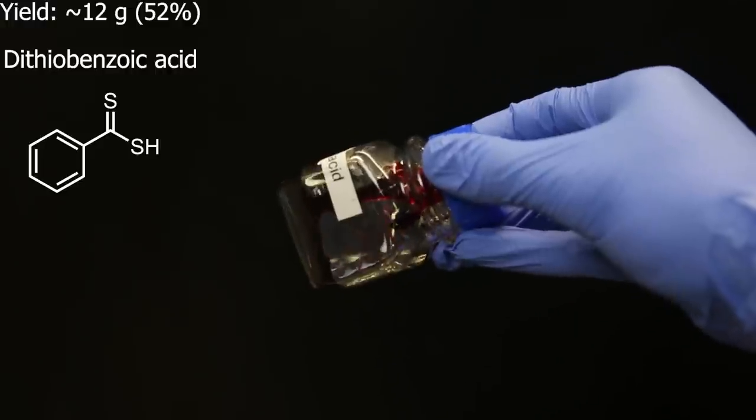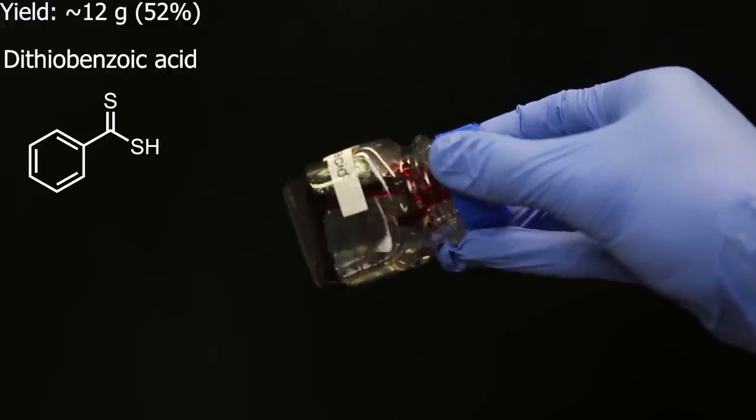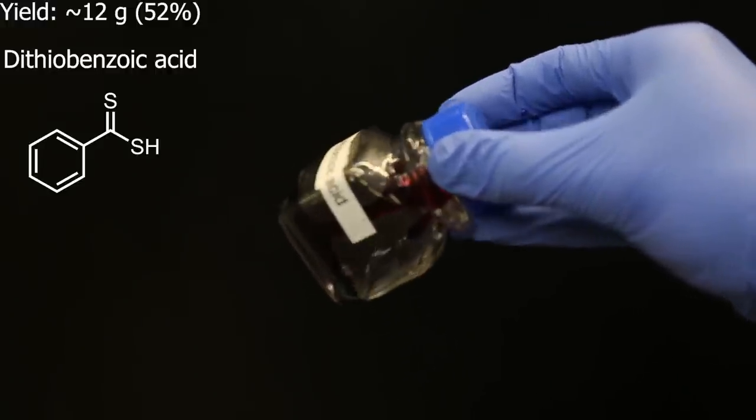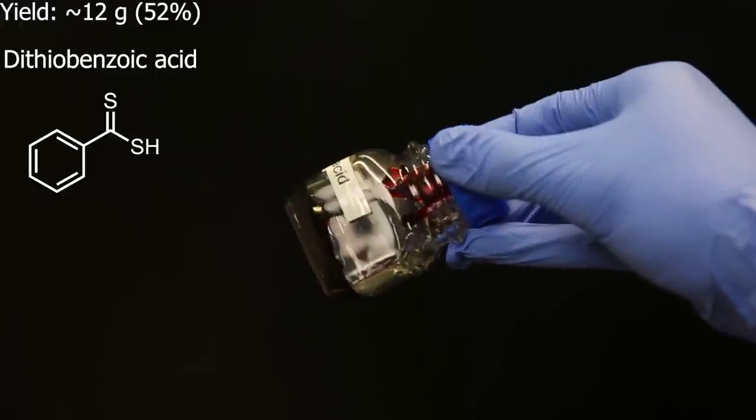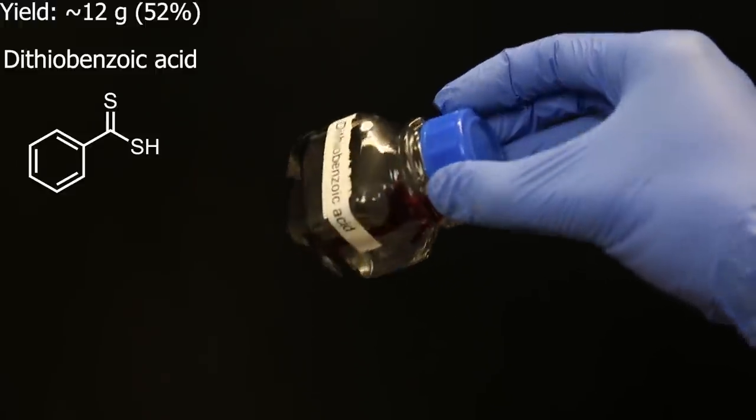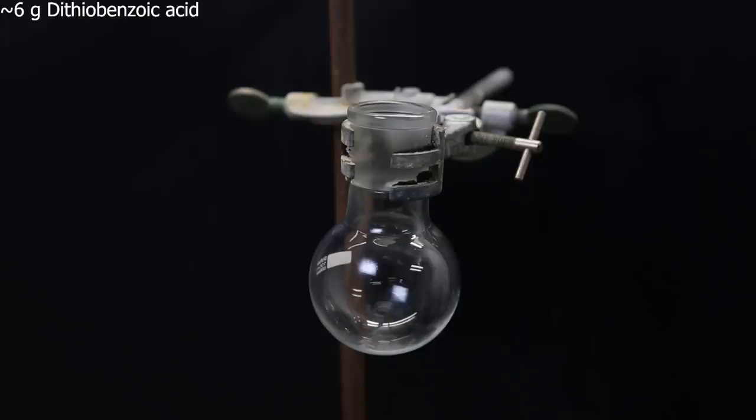When that is done, I measured the yield to be about 12 grams, of which I transferred half to this container. The diethylbenzoic acid is a dark red sticky solid, with a melting point close to room temperature.